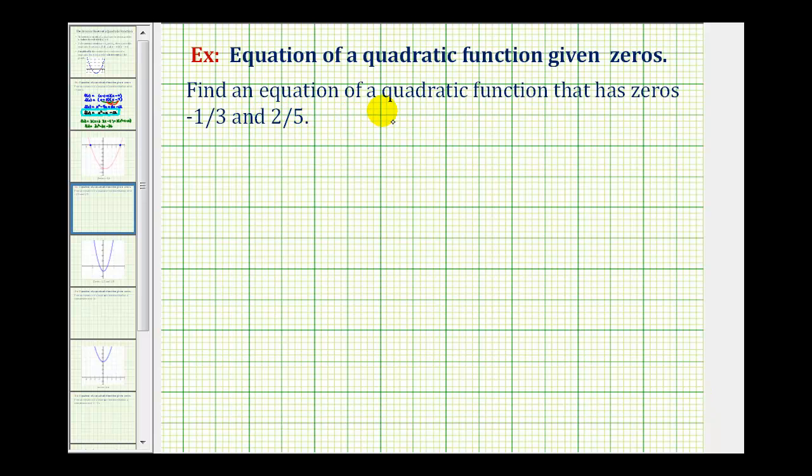We want to find a possible equation for a quadratic function that has zeros negative one-third and positive two-fifths.